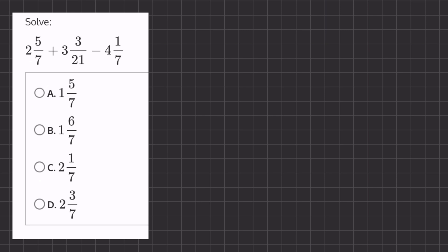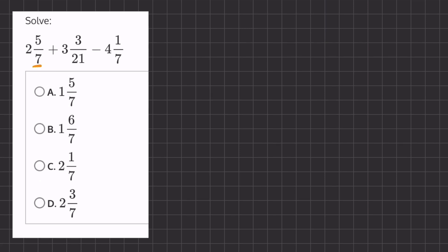Now in order to add fractions together, we have to have the same common denominator. Here we have 7 and 7, and in this case we can turn this 3 and 3 over 21 into a denominator with 7.